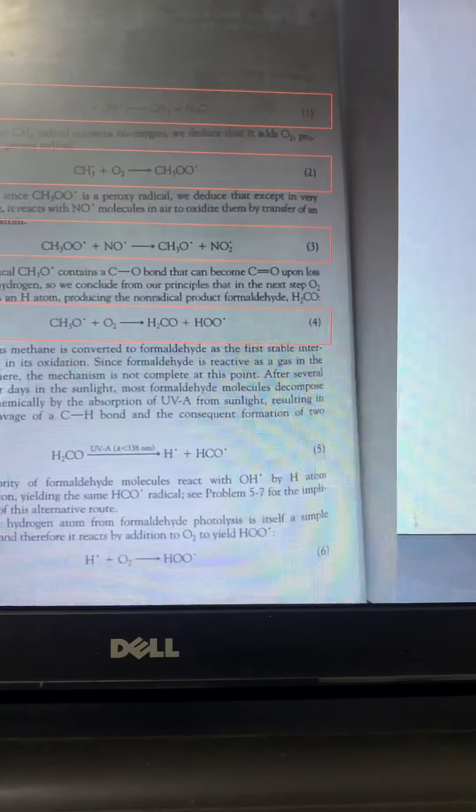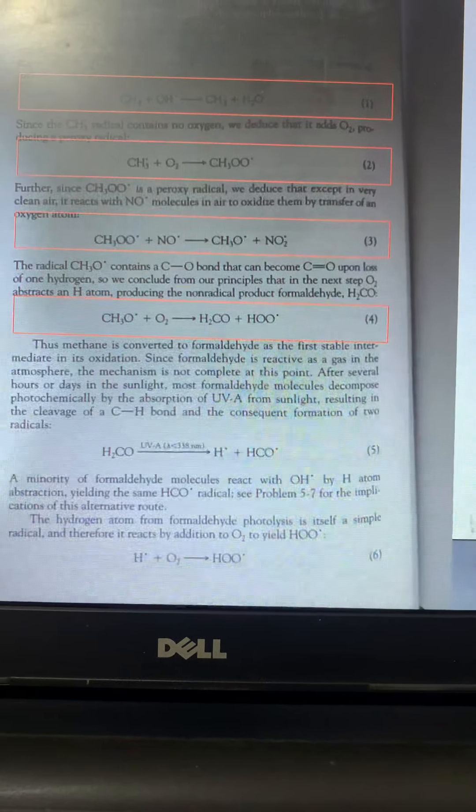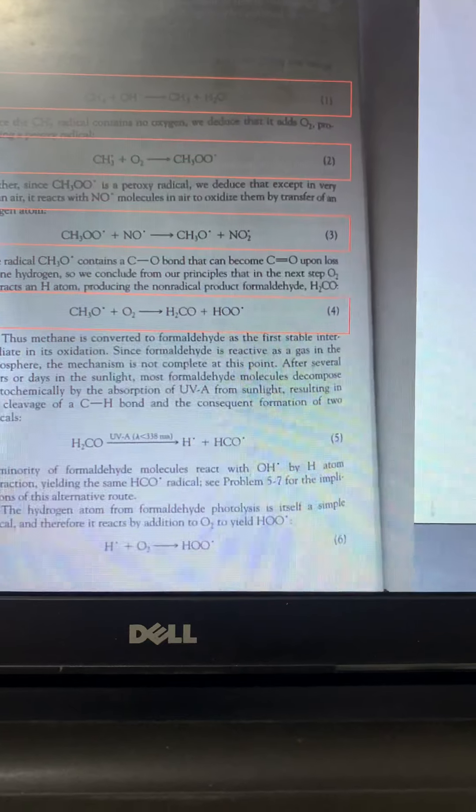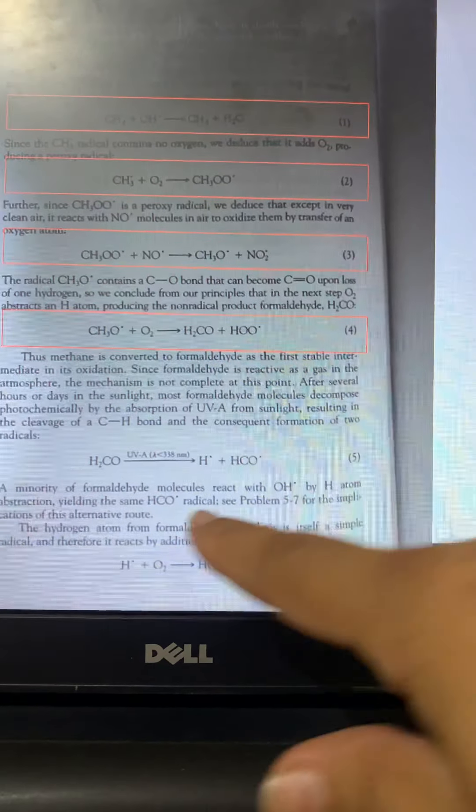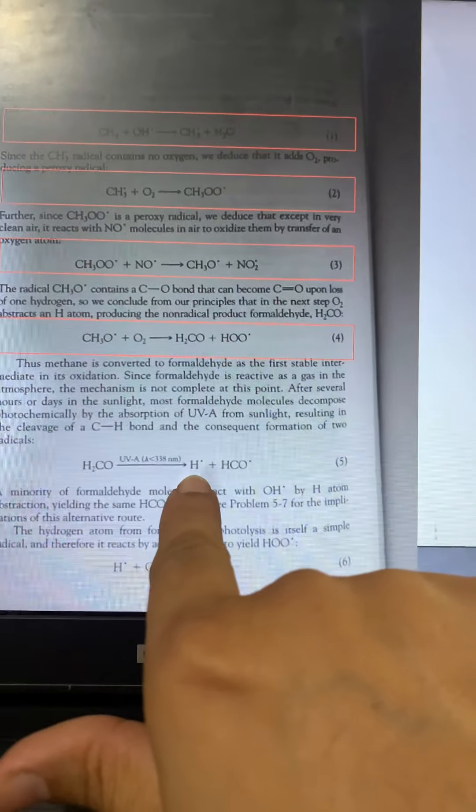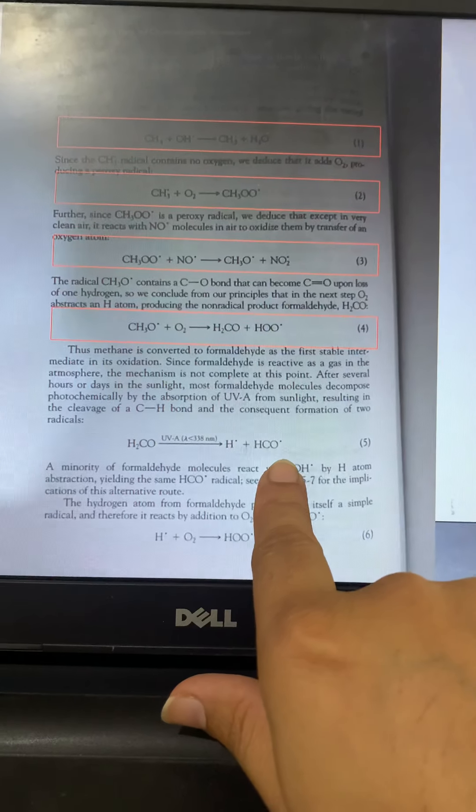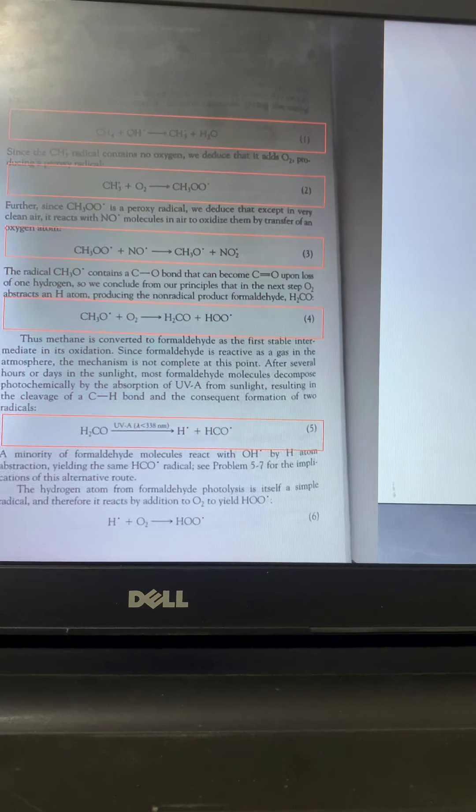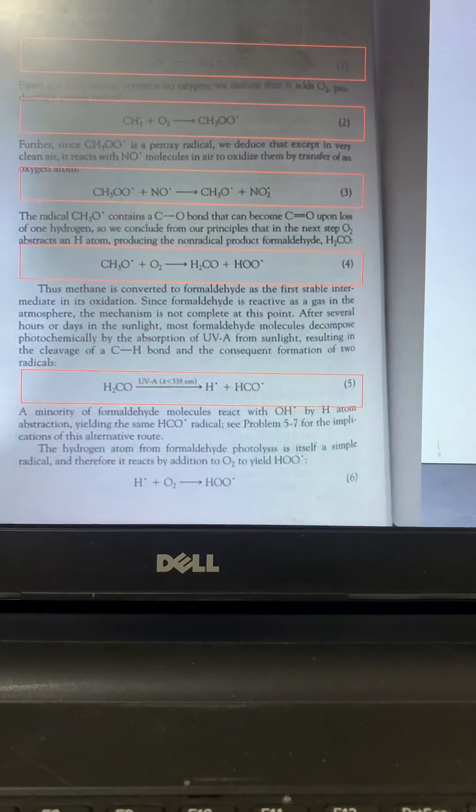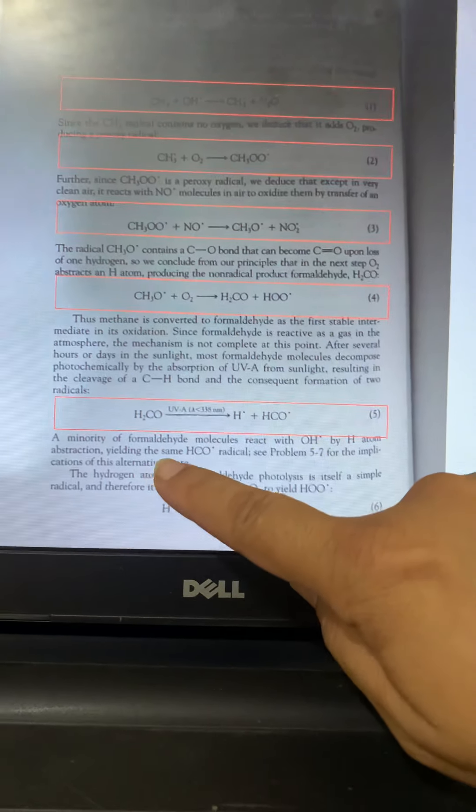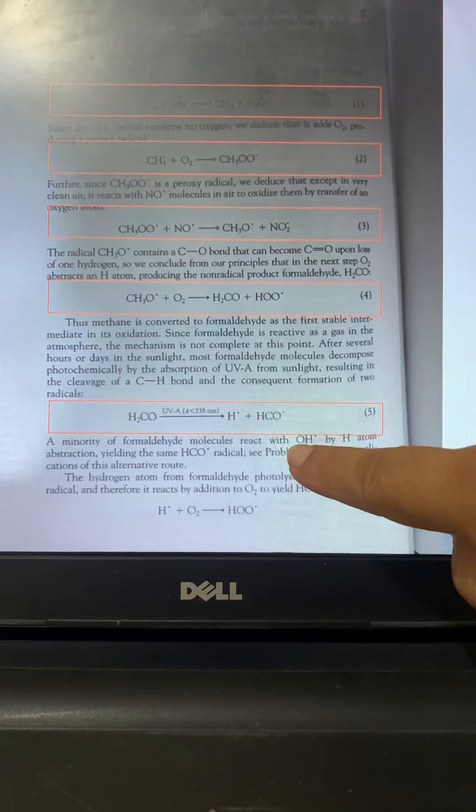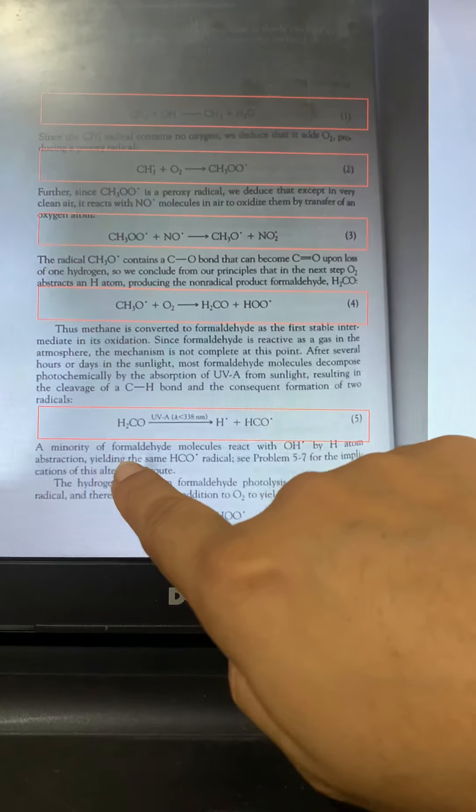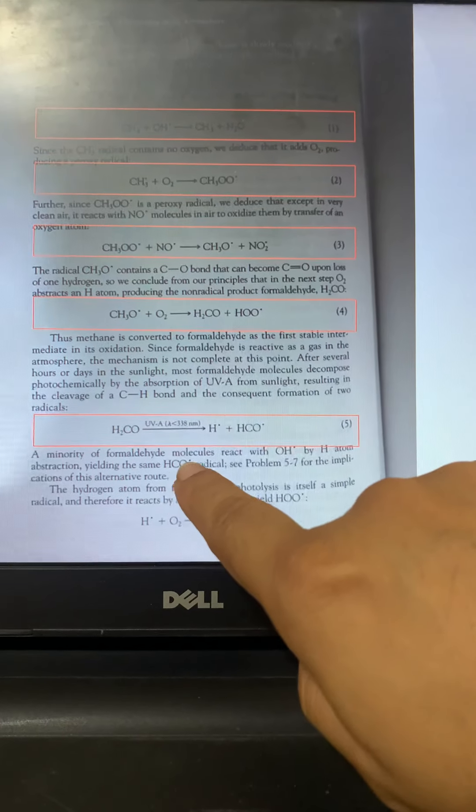Resulting in the cleavage of C-H bond, hydrogen radicals and HCO radicals. Two radicals will be formed in the fifth equation. A minority of formaldehyde molecules react with OH radicals. Some of formaldehyde molecules react with OH radicals. We react by hydrogen atom extraction, yielding the same HCO radicals. This is also possible.